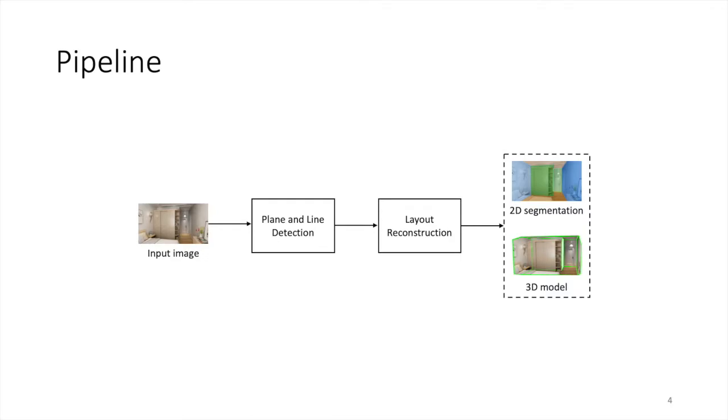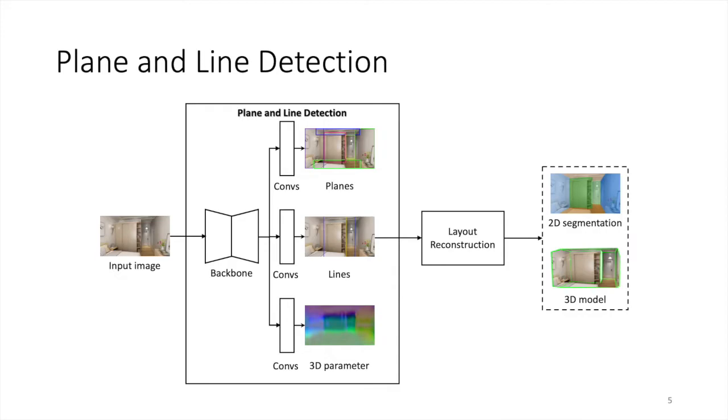Our detection network is built upon CenterNet. We use the center position and size to represent each plane. We also estimate the surface normal and plane offset of each plane. For a 2D vertical line, we represent it by its angle of line inclination and points lying on the line.